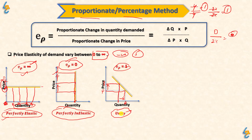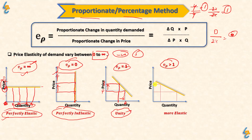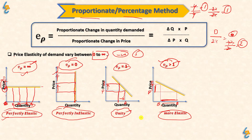We call it Unitary Elastic — the third case — when the price elasticity of demand value equals 1. The fourth case is More Elastic: when price changes by 2% and quantity changes by 4%, the price elasticity value is 2, which is greater than 1. This is the elastic case.